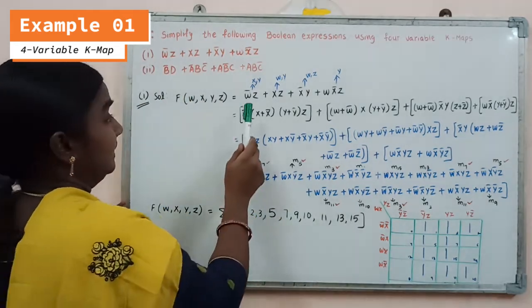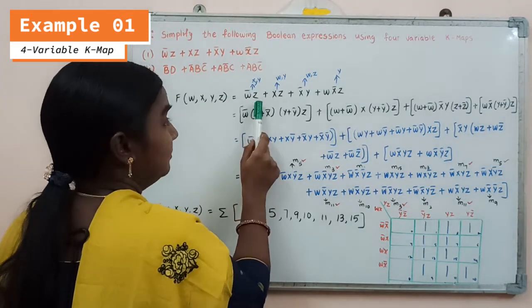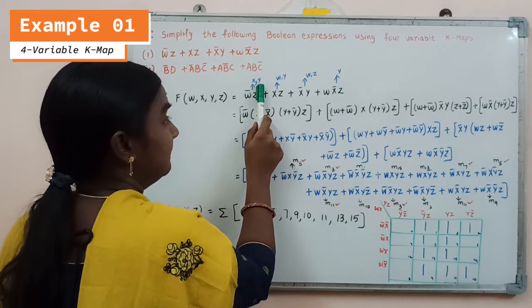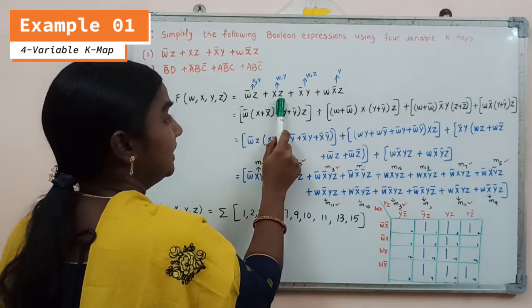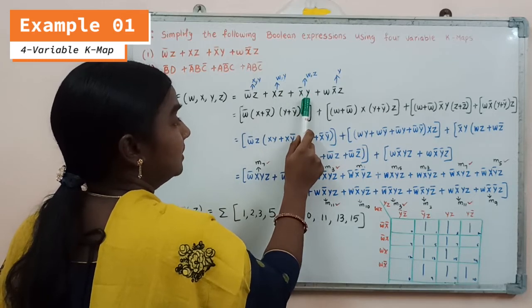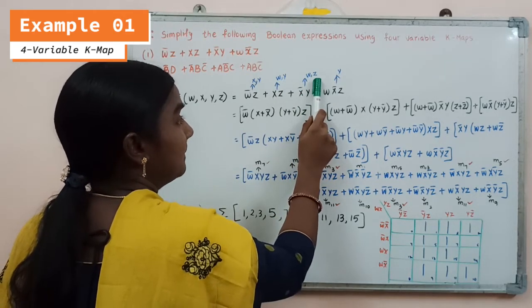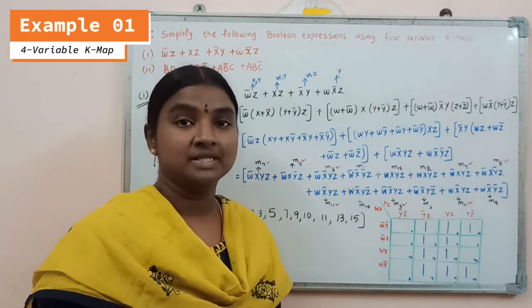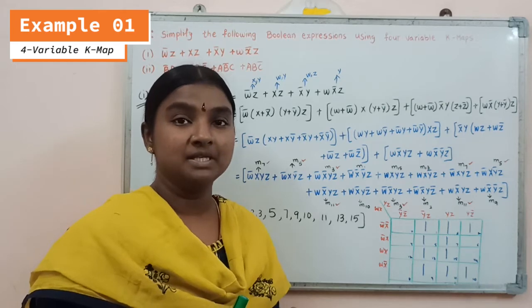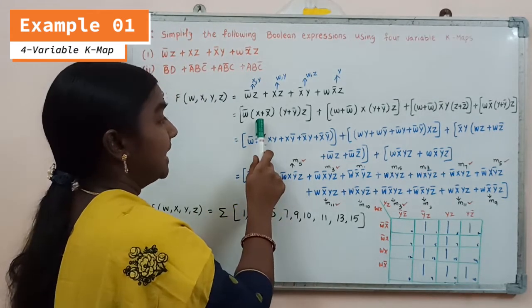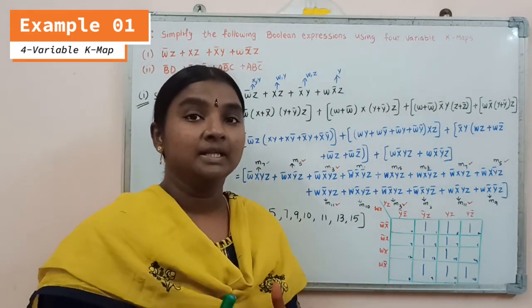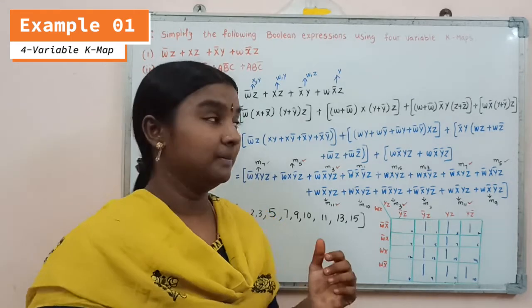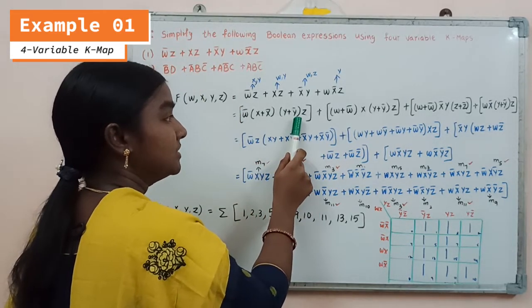Considering the given expression, in the first product term the variables x and y are missing. In the second product term, the variables missing are w and y. In the third product term, the variables missing are w and z. In the fourth product term, the variable y is missing. Whatever variables are missing in the sum of product expression, we need to multiply by considering terms like x plus x-complement, since the sum of a normal variable and its complement equals 1.